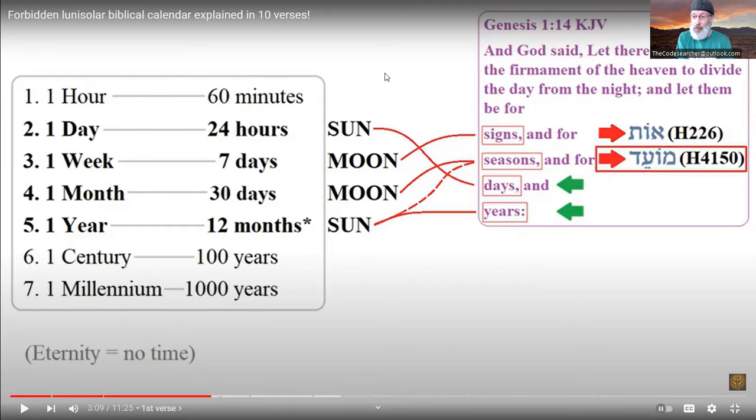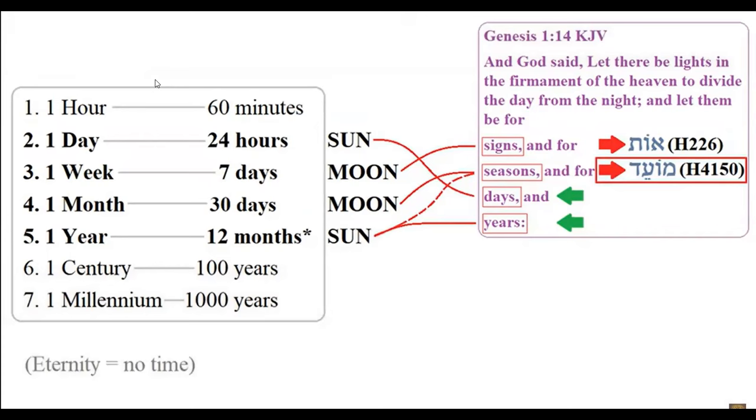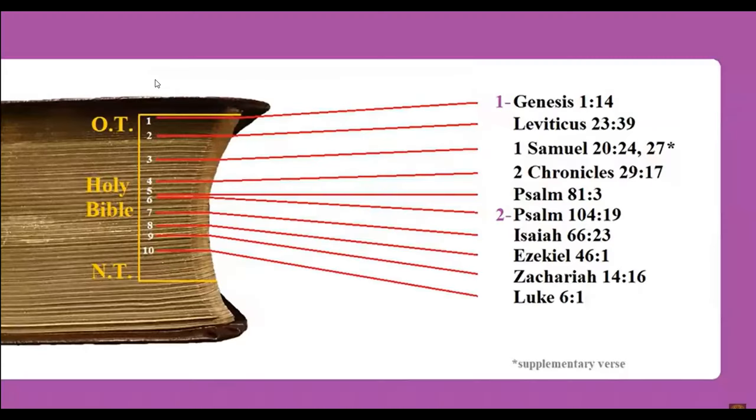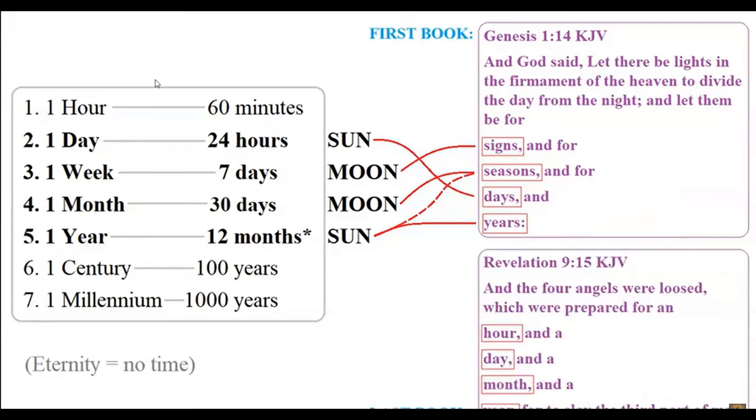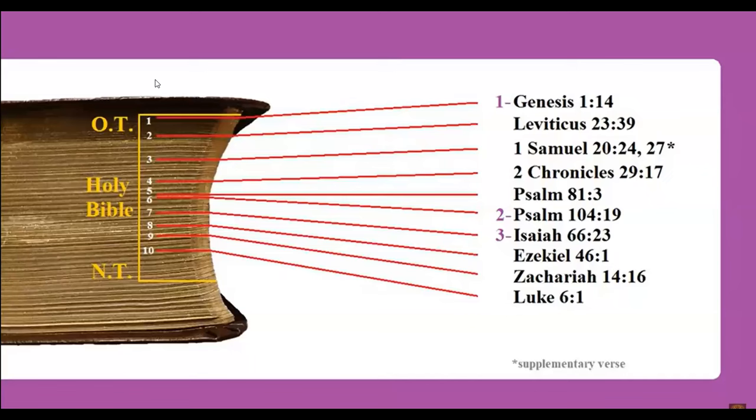Psalm 104:19: 'The moon determines the moedin; the sun knows its going down.' Both witnesses determine the calendar. As for seasons, some translate it as seasons of the year, but biblically speaking there are festivals that are based on the moon observation. He appointed the moon for seasons; the sun knows his going down. The last book of the Bible also talks about the four units of time: 'for an hour, and a day, and a month, and a year.'